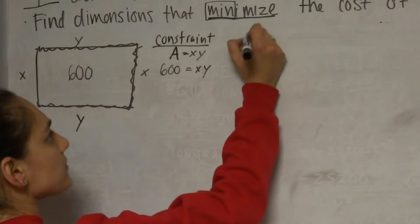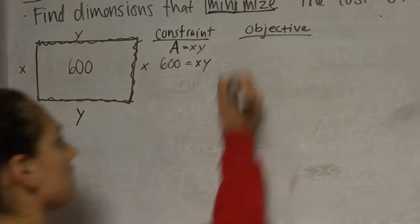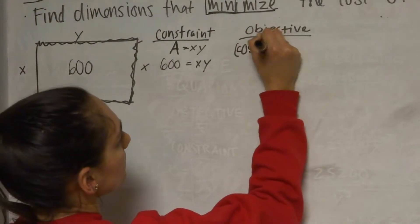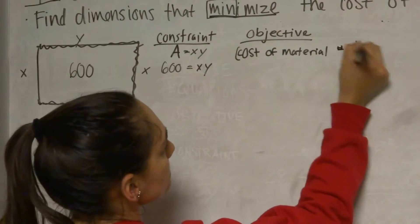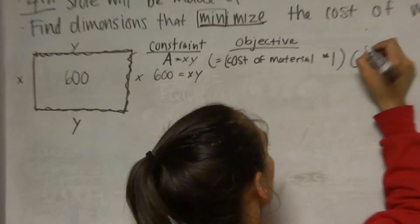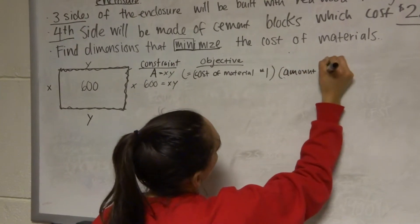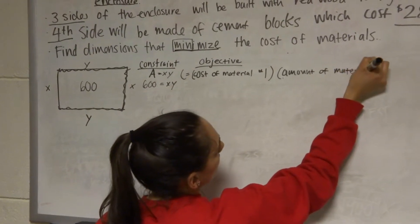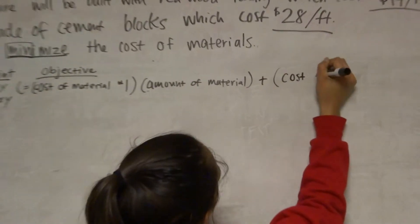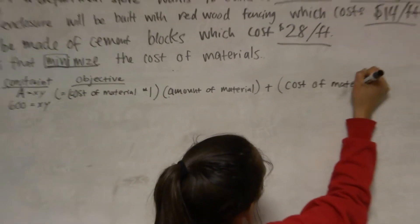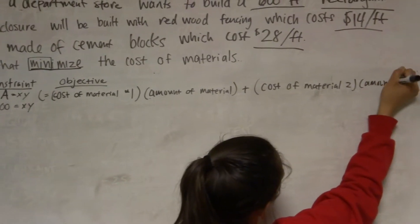This is our constraint equation because it limits what these dimensions can be. Next, we're going to write the objective equation. And first we'll write it out in words. We need the cost of material one, and this is all going to be cost, times the amount of material one. Sorry if you can't read this, it's probably really small. And then we're going to add cost of material two, since we have two, times the amount of material two.